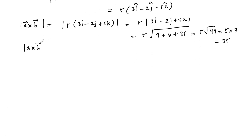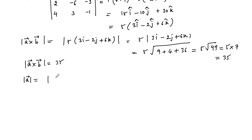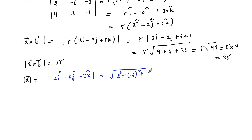Now let us also find |a|. The modulus of vector a = 2i − 6j − 3k is equal to √(2² + (−6)² + (−3)²) = √(4 + 36 + 9) = √49 = 7.